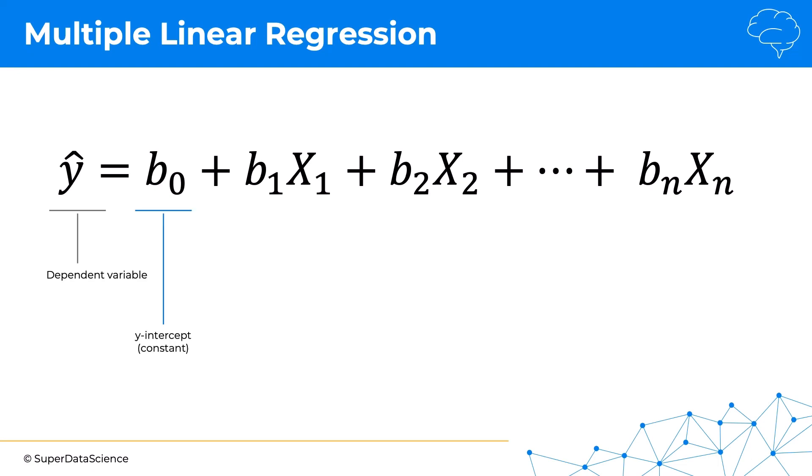dependent variable, then we've got the y-intercept or constant, then a slope coefficient and independent variable. Then we've got more pairs of those - another slope coefficient and independent variable, and so on. Basically, we have as many slope coefficients as we have independent variables.